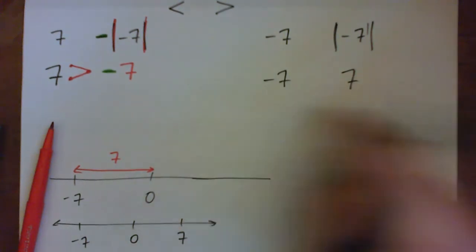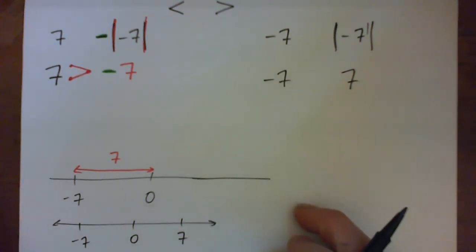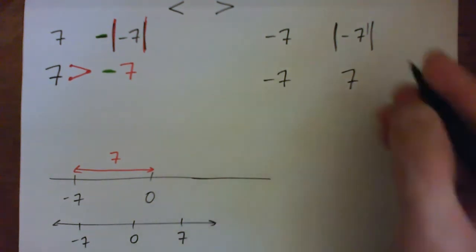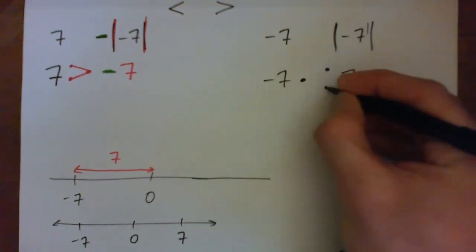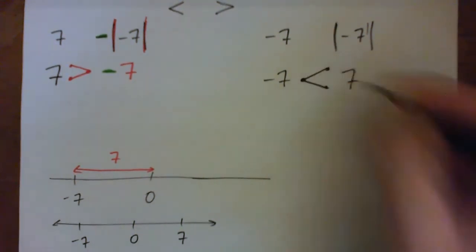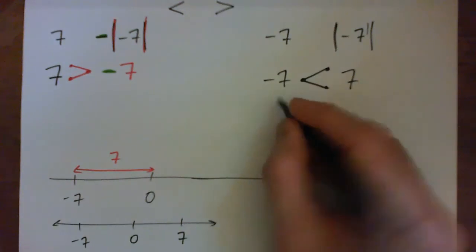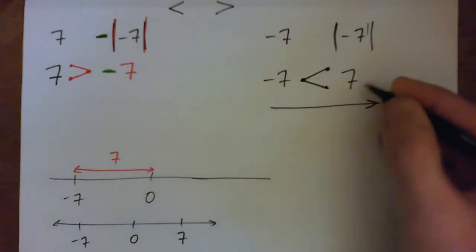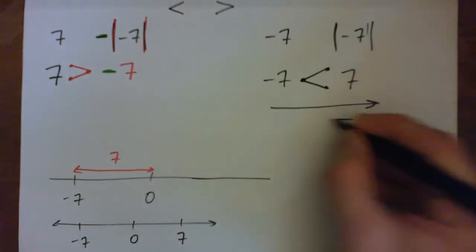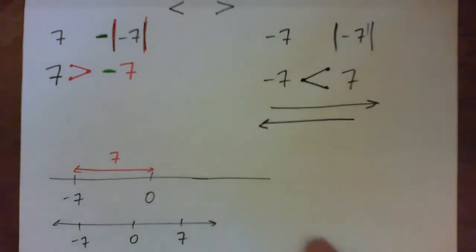Which is greater, which is lesser? So the negative 7 is to the left and the positive 7 is to the right. So the negative 7 is lesser and positive 7 is greater. And so the inequality sign goes like that. If you read it from left to right, it says negative 7 is less than 7. If you read it from right to left, it says 7 is greater than negative 7.